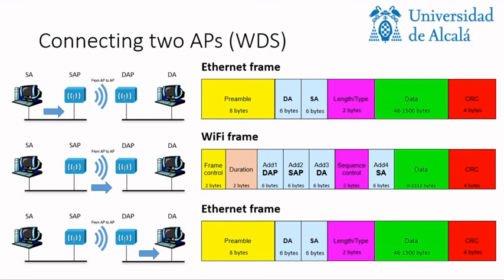Finally, if we have two APs connected, the destination address of the Ethernet frame goes to address three and the source address goes to address four. Address one is the destination of the next hop of the mobile communication (destination access point), and address two is the source access point. When we go back to the Ethernet frame, we recover the original frame — because an Ethernet frame sent from a source to a destination should be transparent, completely identical.